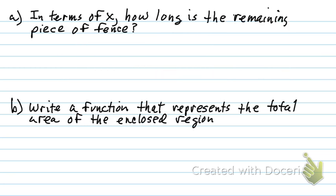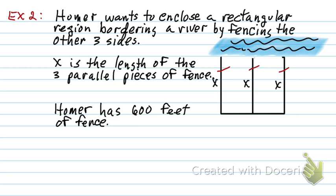Let's see what part A asks us to find. In terms of X, how long is the remaining piece of fence? Well, if we go back and look at the drawing, how much is he used up to do those three little vertical strips of fencing there? X plus X plus X that's 3X he's used up. Yeah? Well, what's left? He started with 600, he's used up 3X worth. That's what's left. 600 minus 3X.